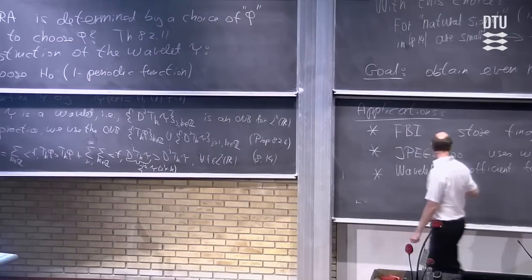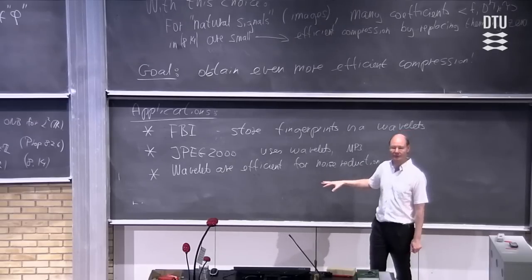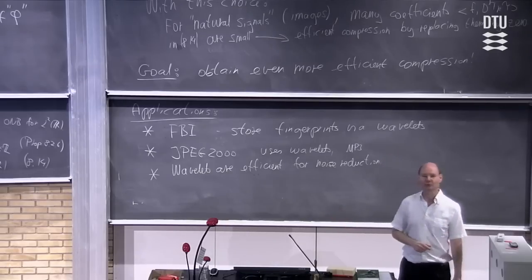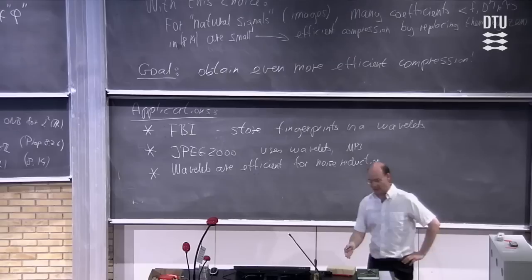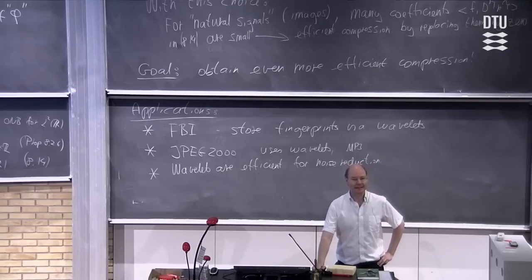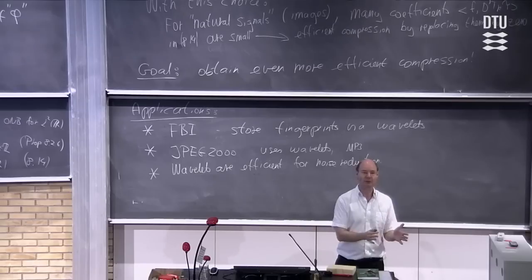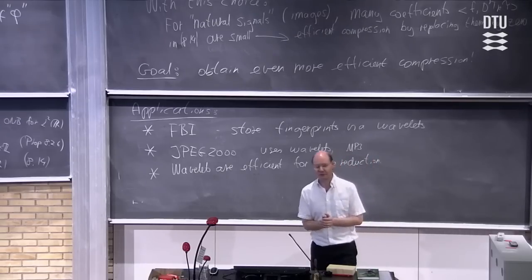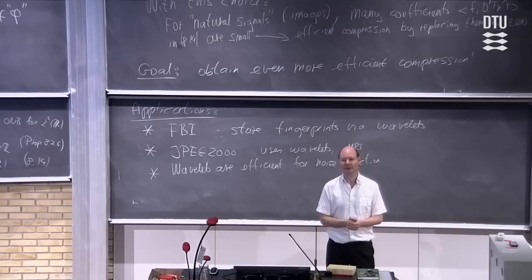So by now you understand that wavelets are efficient for noise reduction. We will now take our break and begin the next hour with something apparently completely different: B-splines. But at the end of the next lecture you will find out there is a reason we start with wavelets and end with B-splines, because what you will do at the problem session today is to show that B-splines — some modifications of them — give some very good wavelets as well. Everything turns out to be connected at the end.